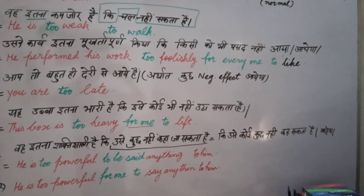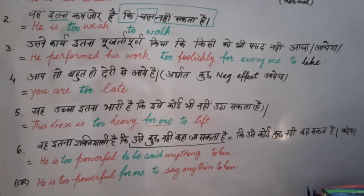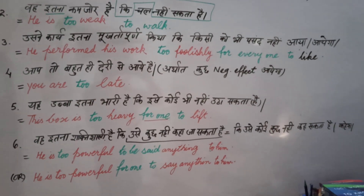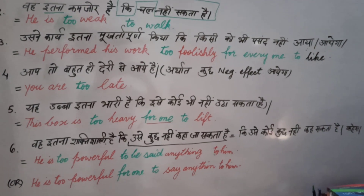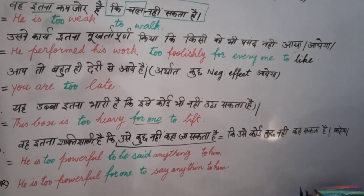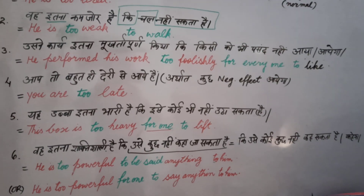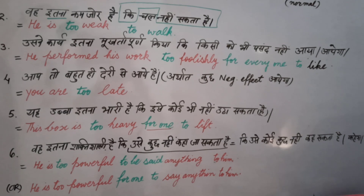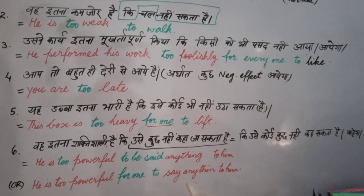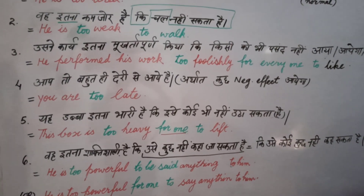'Yeh dabba itana bhaari hai ki isay koi nahi utha sakta' — the translation will remain the same: 'This box is too heavy.' There are two different subjects here: the box and the person who will lift it. So we write, 'The box is too heavy for one to lift.' When the second subject refers to somebody or anybody, in a negative sense we use 'anybody.' This sentence can also be written in passive voice: 'This box is too heavy to be lifted by anybody.'